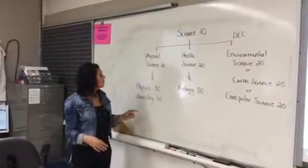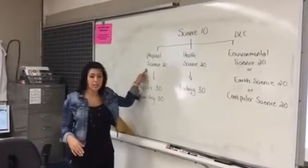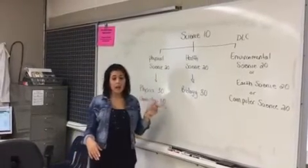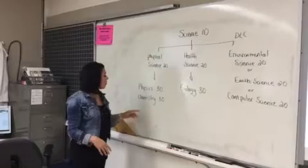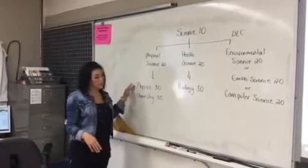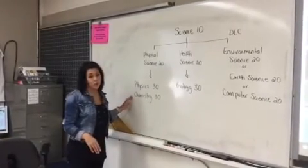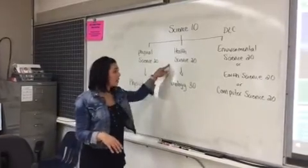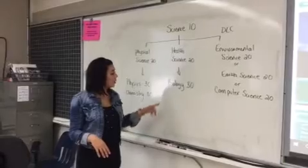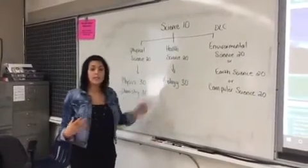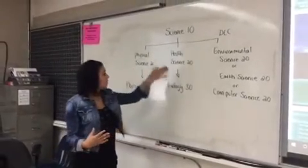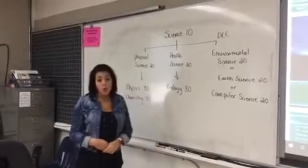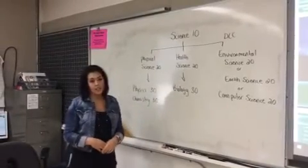Now at the school, if a student chooses to take the Physical Science 20 strand after they are finished Science 10, that will get them into a Physics 30 course or a Chemistry 30 course for their grade 11 or 12 year. If they take the Health Science 20 level route, that will get them into Biology 30. Now students have a choice to take one of these or both to get into the 30 level sciences.